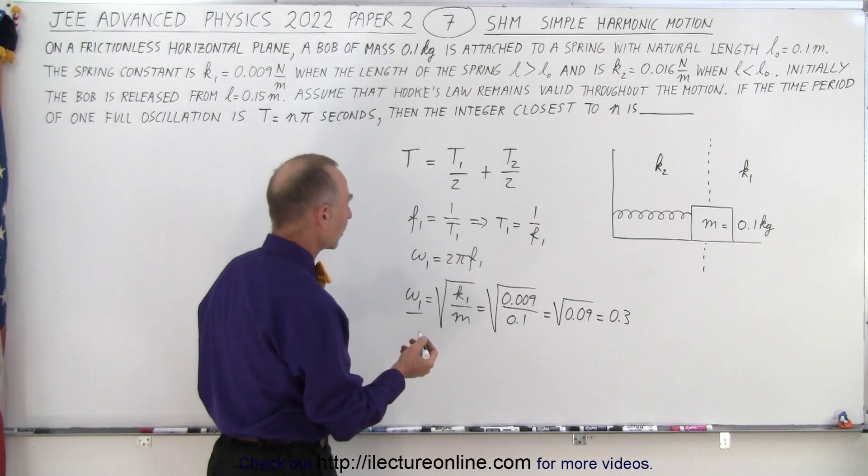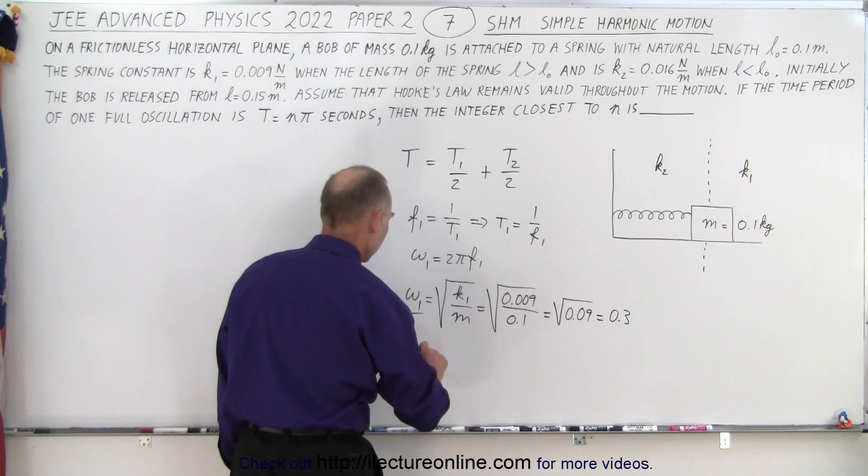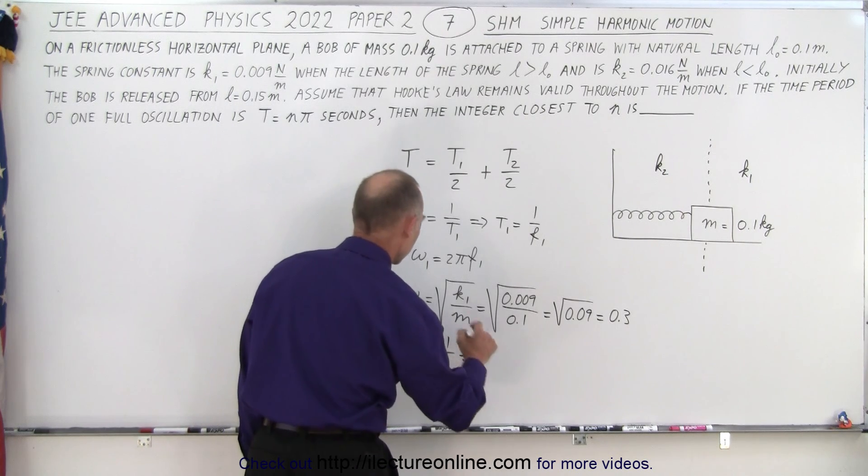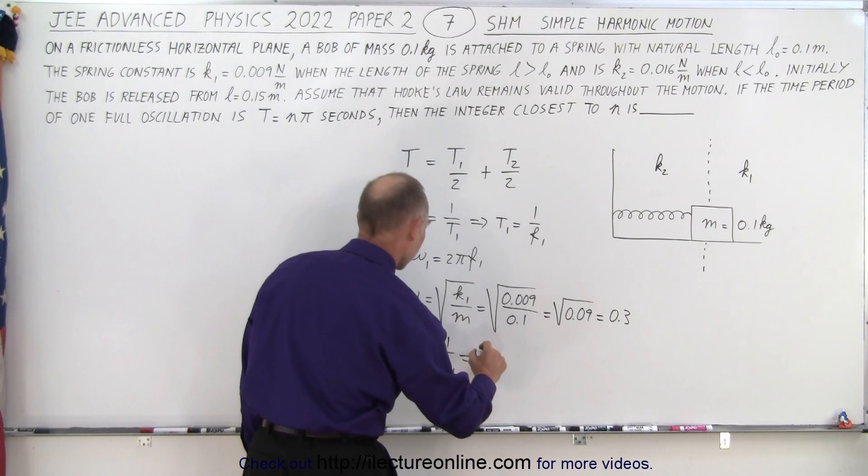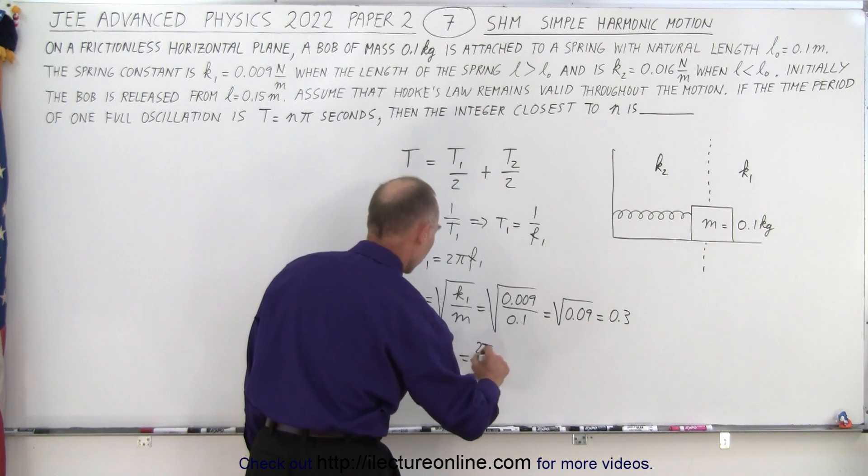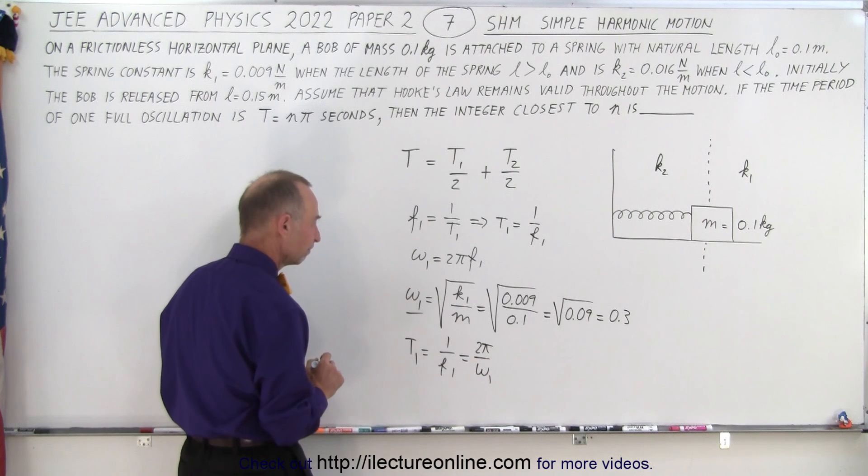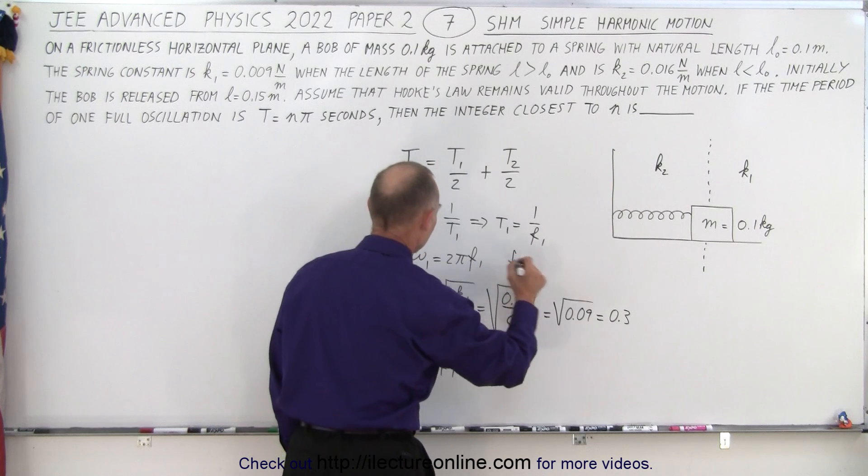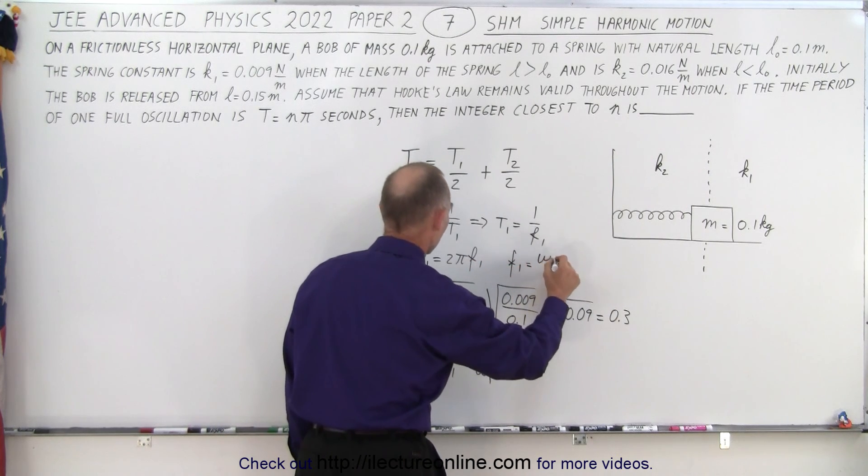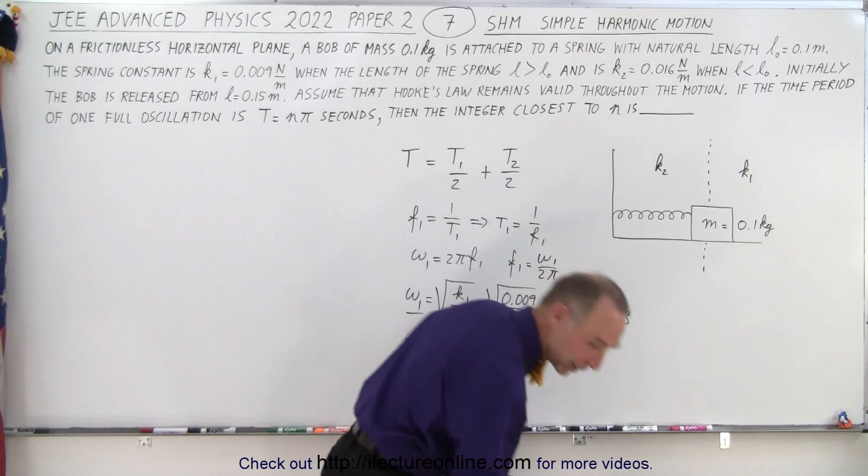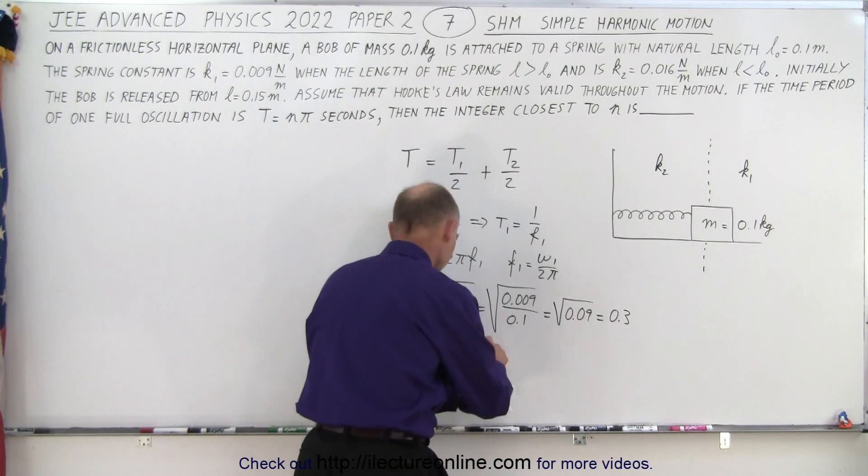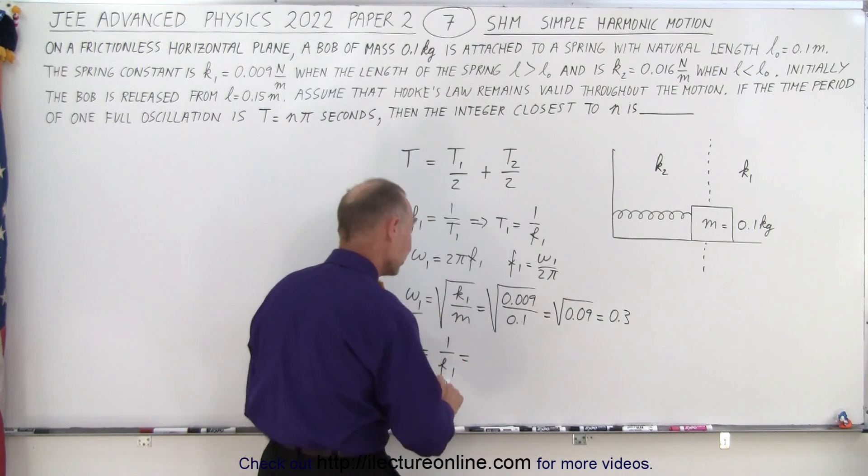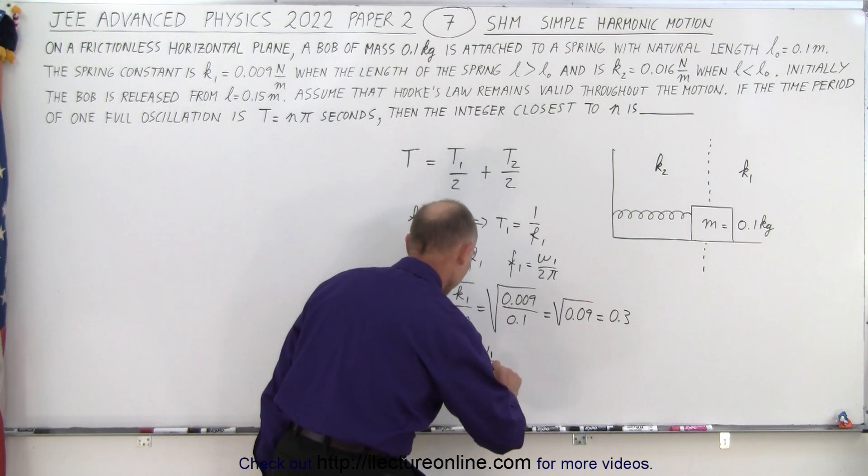So now we kind of work our way backwards. So we say that t1 is equal to 1 over f1 which is equal to 2 pi over omega 1. So f1 is equal to omega 1 over 2 pi. So here we have omega 1 divided by 2 pi.